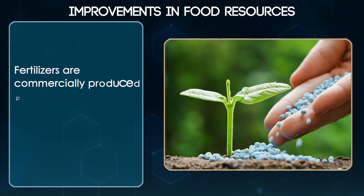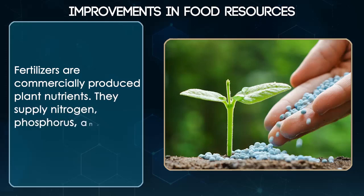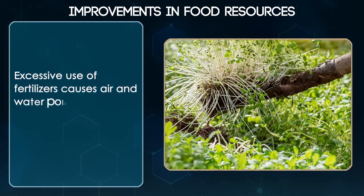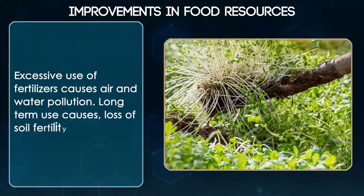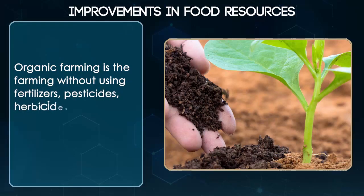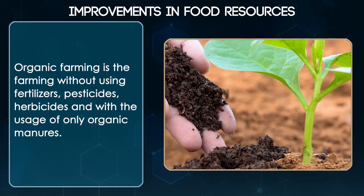Fertilizers are commercially produced plant nutrients. They supply nitrogen, phosphorus and potassium. Excessive use of fertilizers causes air and water pollution. Long term use causes loss of soil fertility. Organic farming is the farming without using fertilizers, pesticides, herbicides and with the usage of only organic manures.